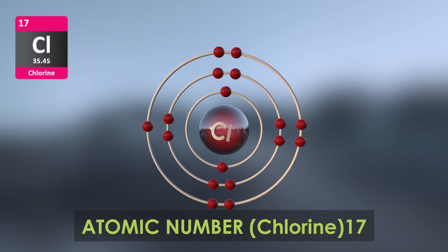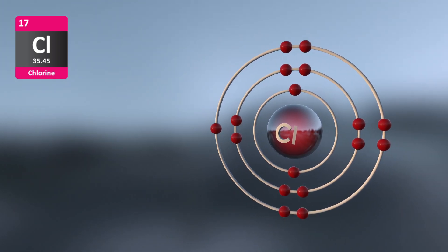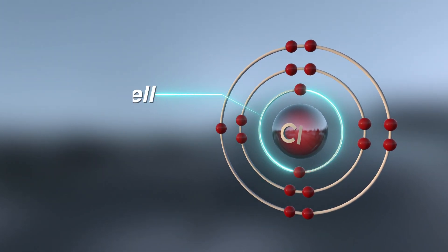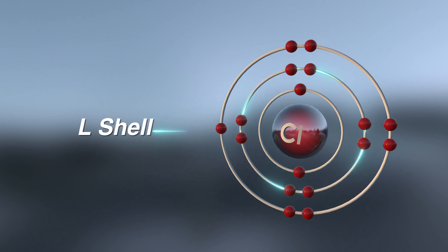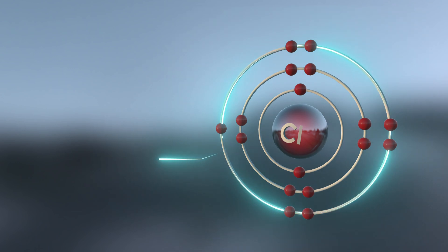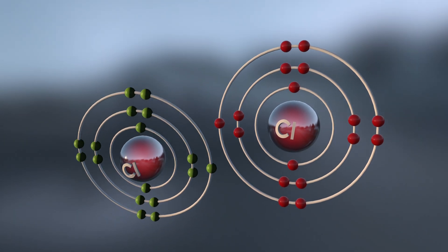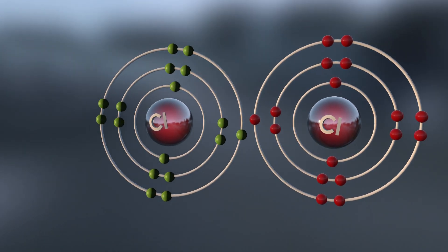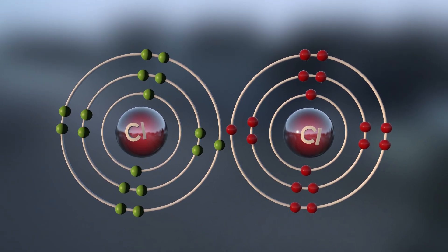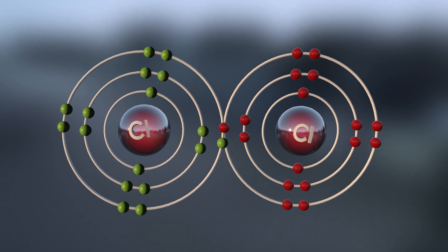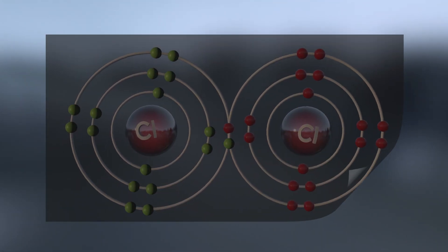The atomic number of chlorine is 17. It consists of two electrons in K shell, eight electrons in L shell, and seven electrons in M shell. To complete its octet, it should gain one electron. When two atoms of chlorine react with each other, both the atoms share their one electron and get stable.